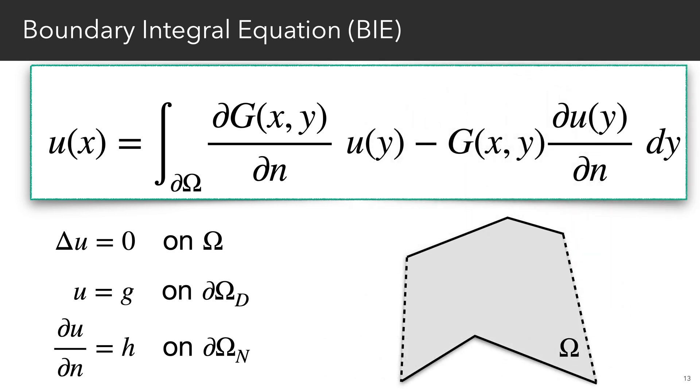whereas the Neumann boundary condition specifies the value of the normal derivative of the solution. The boundary integral equation represents the solution at any point in the domain as an integral of the Dirichlet and Neumann values over the boundary. In this integral, g represents the free space Green's function, which is known analytically. What this integral really says is that if you know both the Dirichlet and the Neumann values on the boundary, you know the solution everywhere on the domain.